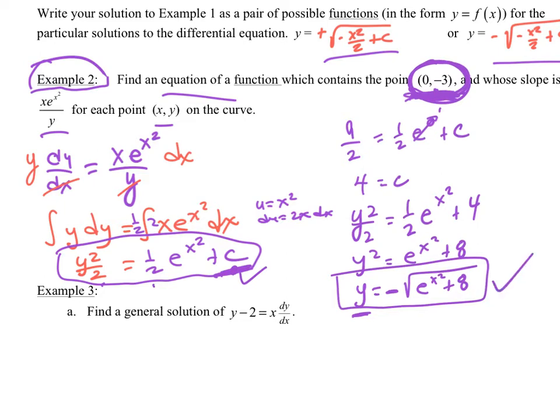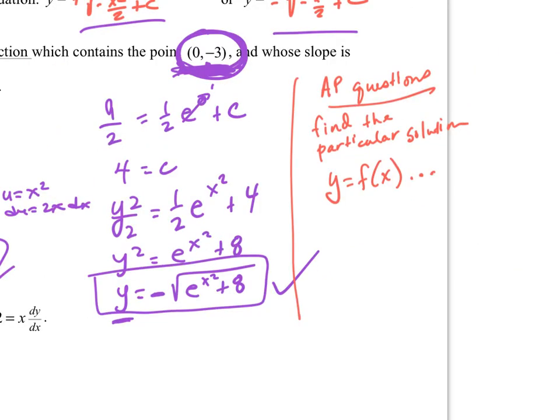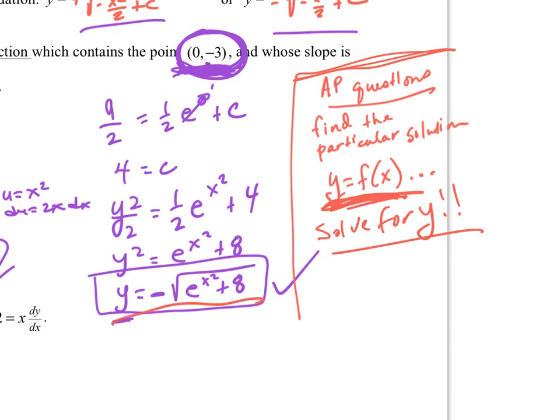Solve for y. You'll see this in AP lingo. They will say find the particular solution that looks like this, y = f(x). Well that means solve for y. So that's when you have to solve for y. That's what that's telling you. So that's what I did here. And it should work out that if I plug in 0 that I am going to get a -3.